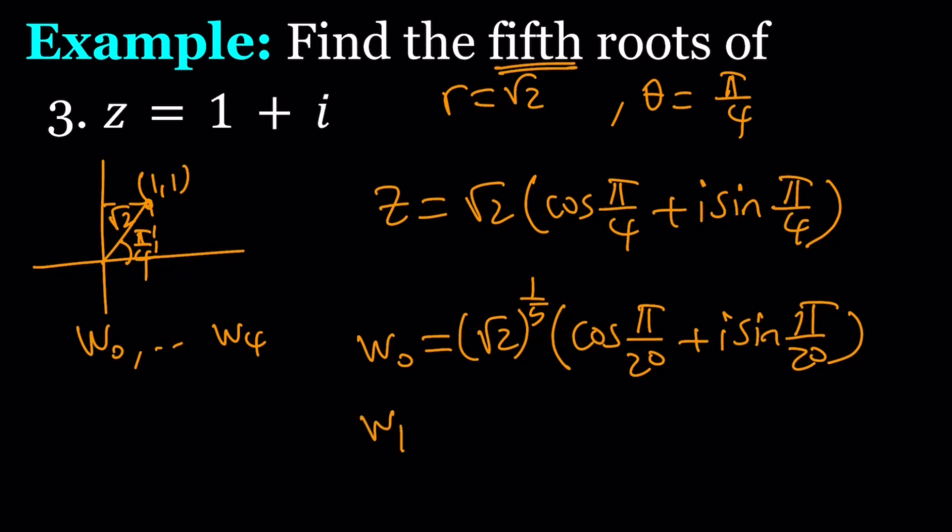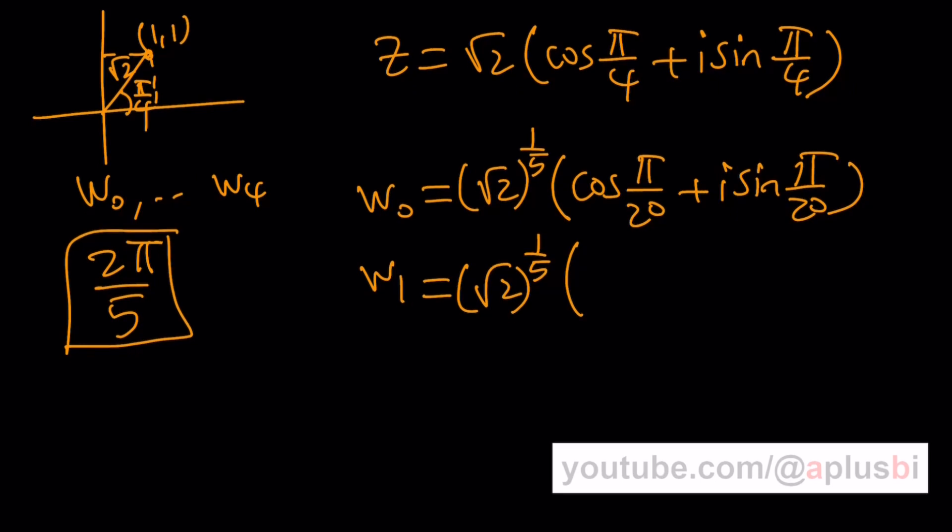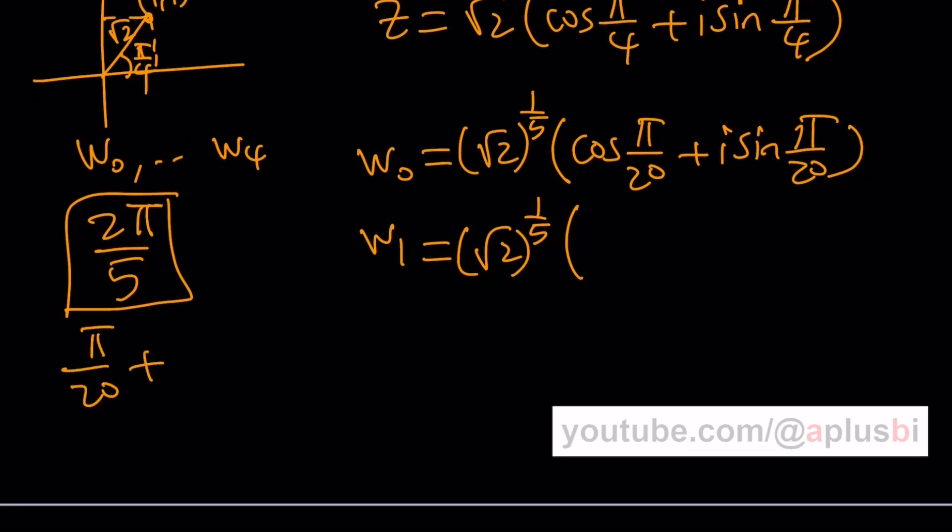To find the next one, let me show you how to find the second one, and then the rest will follow easily. The r value is not going to change. And then you have to add to this angle. Now remember, the whole thing is 2 pi, and you're finding the fifth roots. So that's what you need to increment every time. So to find the next argument, you're going to basically add pi over 20 plus 2 pi over 5, which is 8 pi over 20. That's going to give you 9 pi over 20 plus i sine 9 pi over 20. And then the rest will follow. You're just going to add, in other words, you're basically adding 8 pi over 20 every time without changing the modulus.